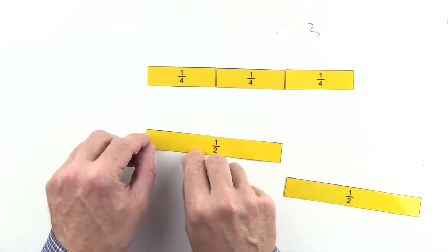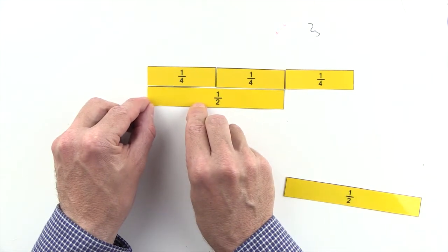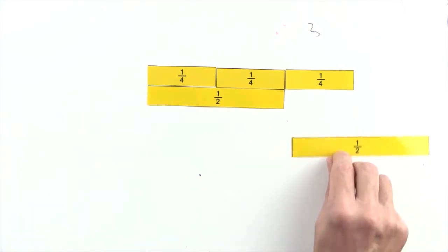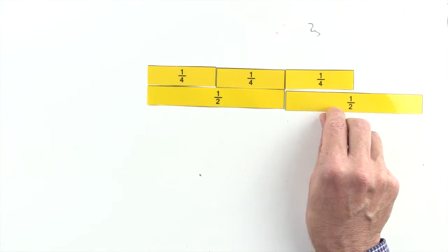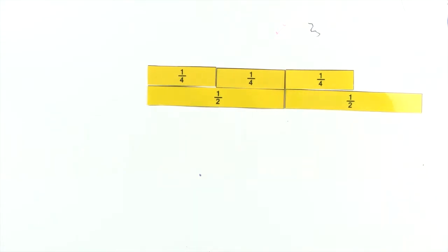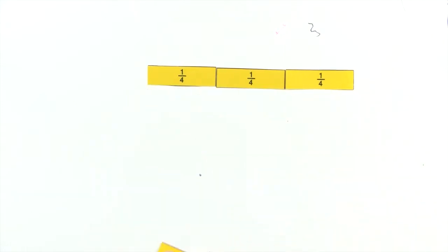One half is less than three quarters, and two halves are greater than three quarters. So we can't use halves to make an equivalent fraction to three quarters.